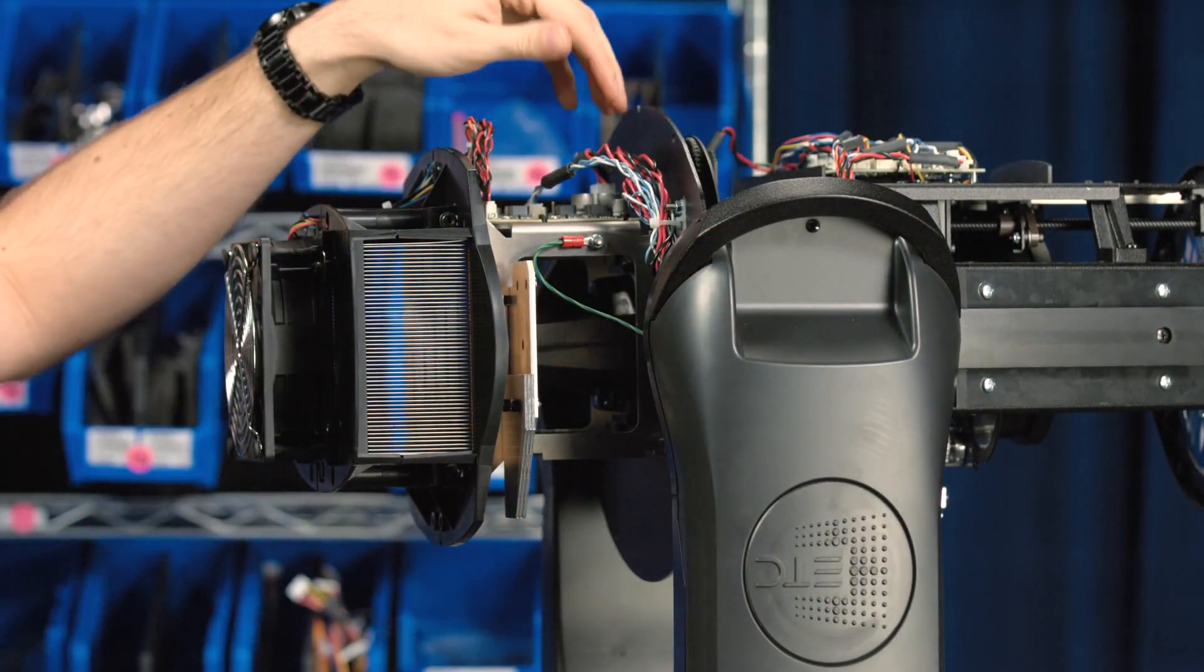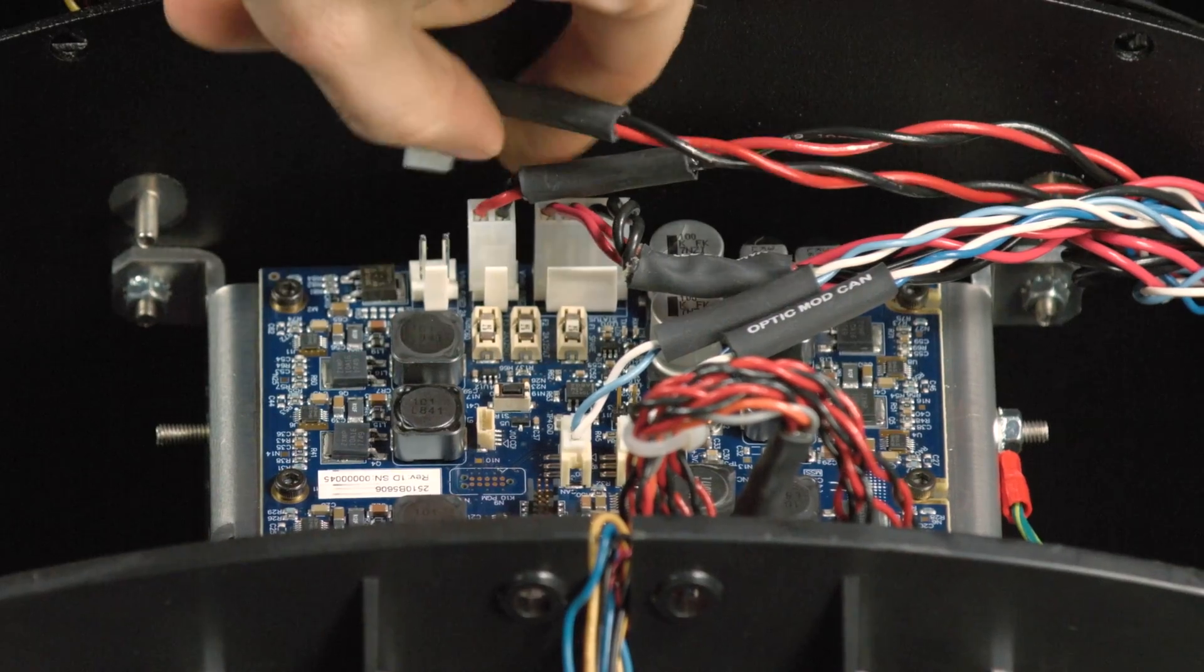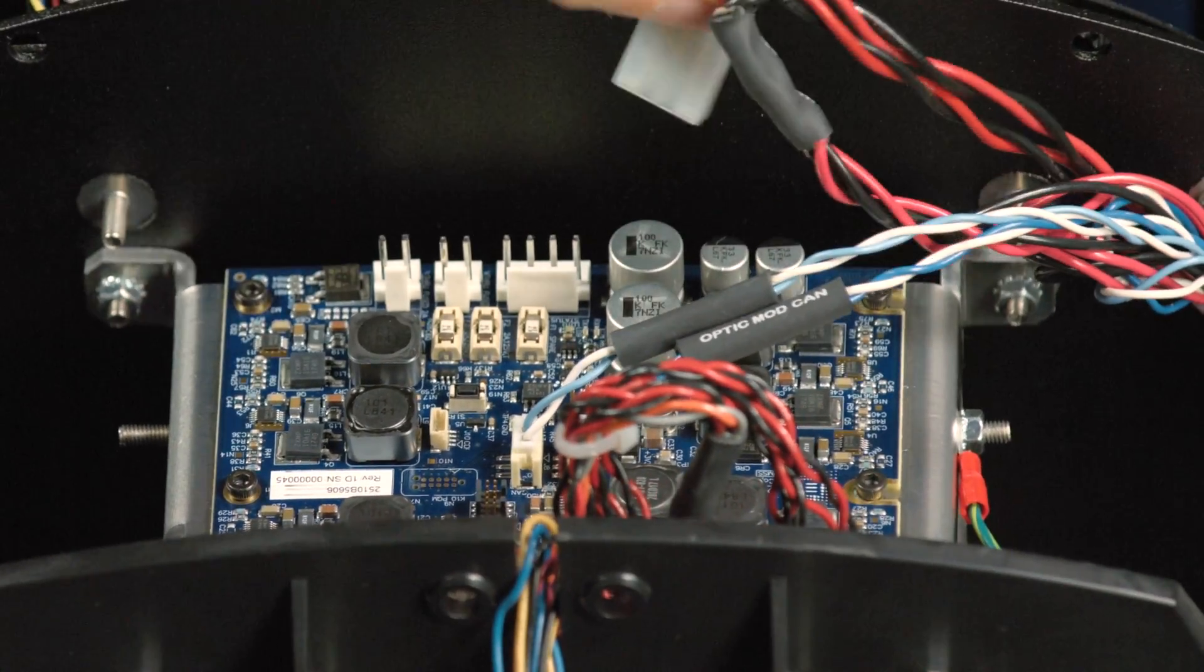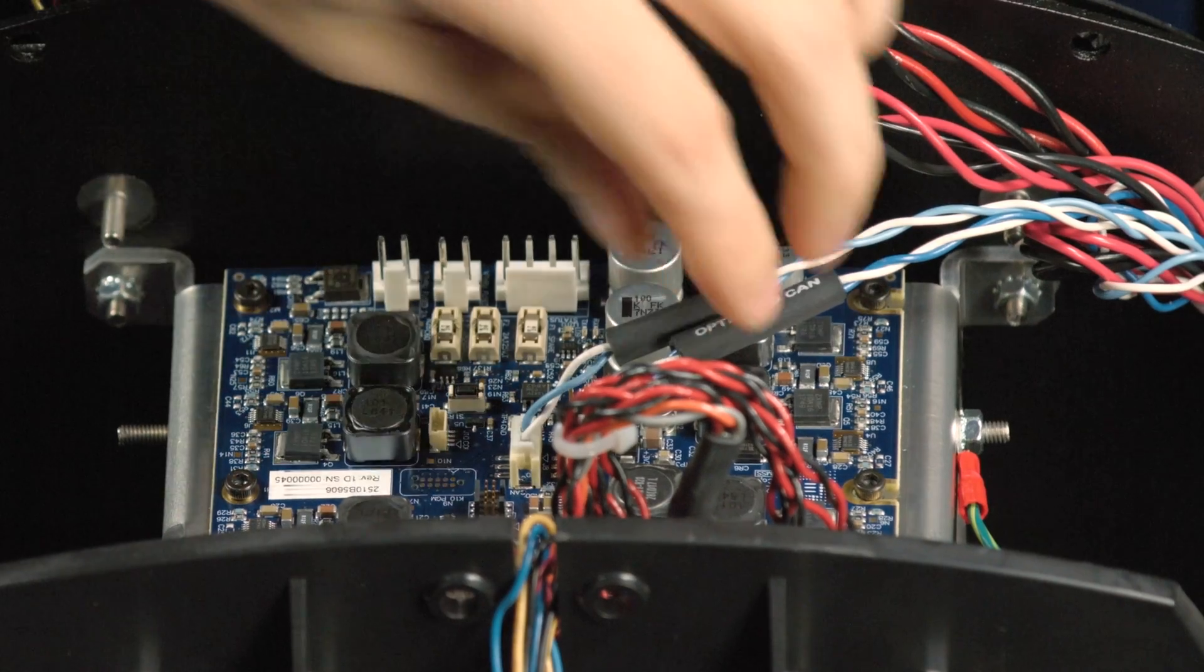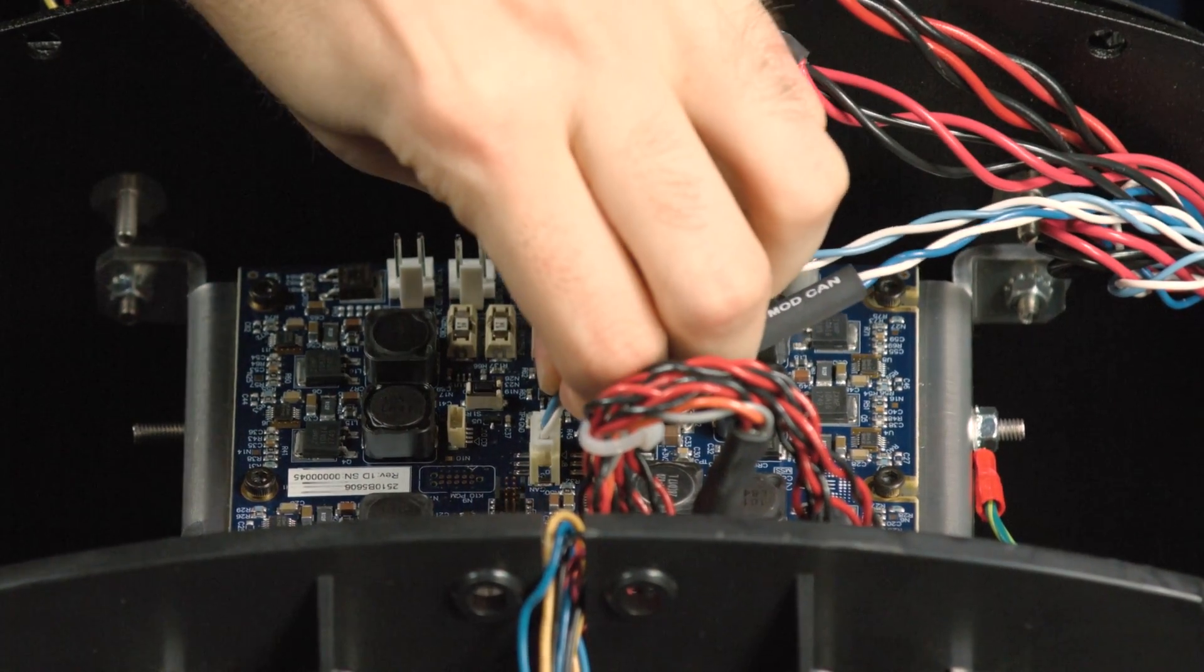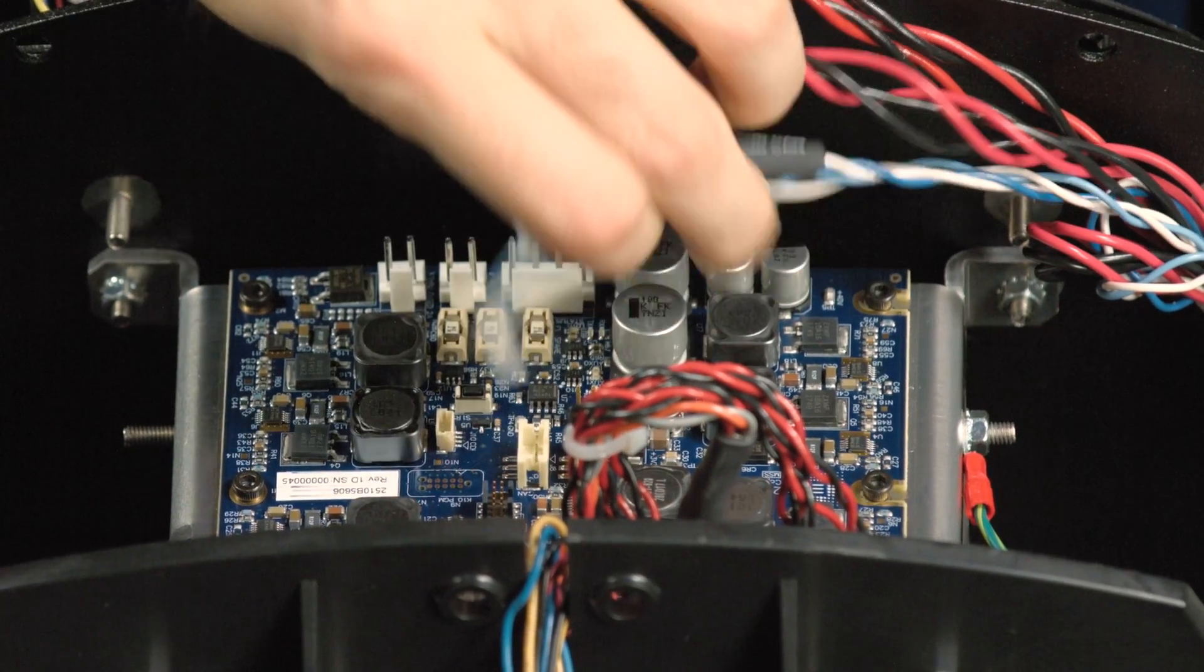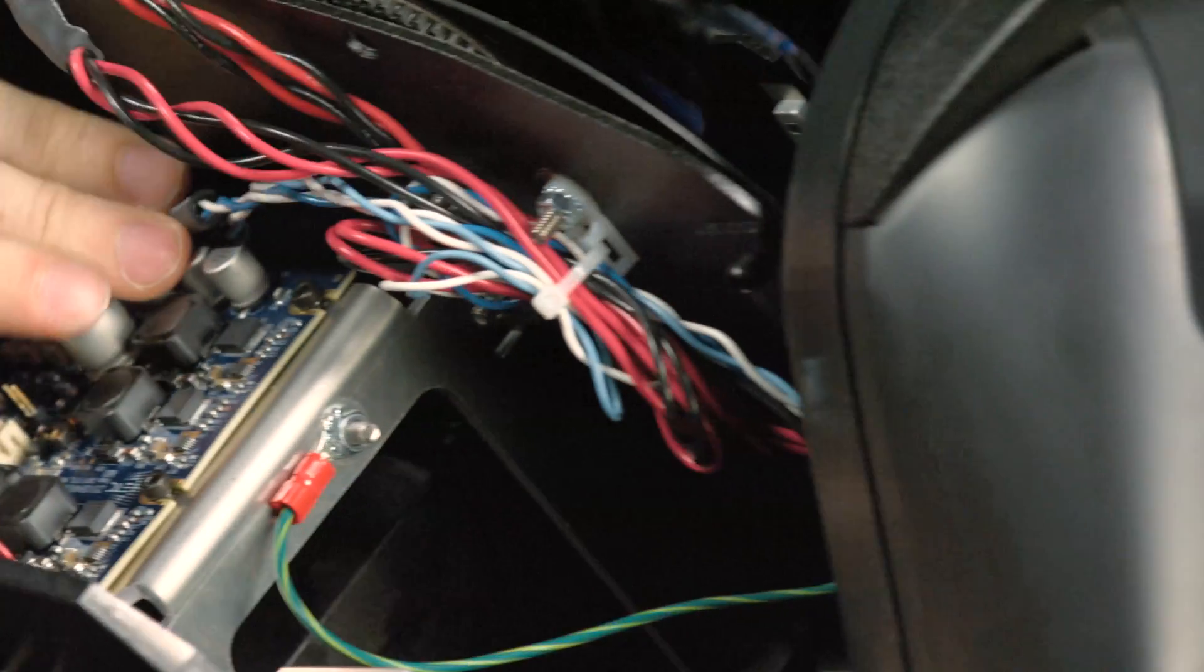After we've removed the cover, we'll want to remove the wiring. First, we've got our power. We'll want to remove the canvas, and finally, we'll want to remove the ground.